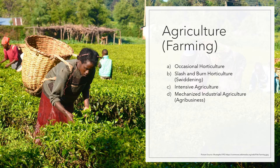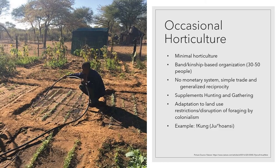The third type of subsistence pattern is agriculture, also better known as farming. We divide this into four very different kinds. The first is occasional horticulture — it's a minimal reliance on horticulture, and the horticulture tends to just supplement the foraging. We tend to find it only in band and kinship-based organizations, like 30 to 50 closely related people. Generally there is not a monetary system, or only limited contact with the monetary system around them, and simple trade and generalized reciprocity tend to be greater.